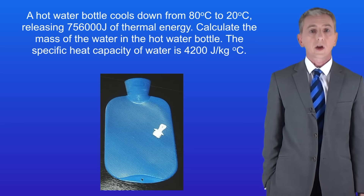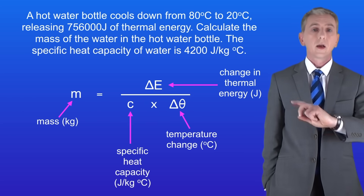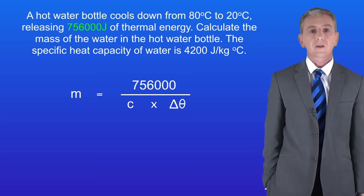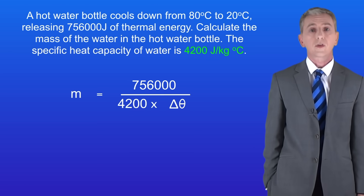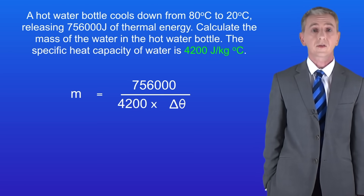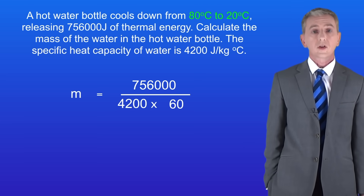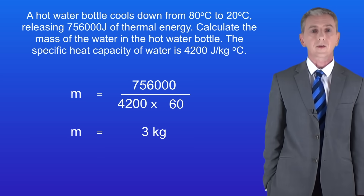I've rearranged the equation to calculate mass, and here it is. The thermal energy change is 756,000 joules. The specific heat capacity of water is 4200 joules per kilogram per degree Celsius, and the temperature change is 60 degrees Celsius. Putting these into the equation gives us a mass of 3 kilograms, and that's our final answer.